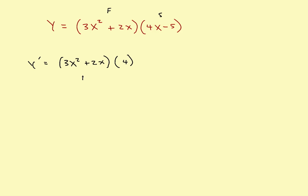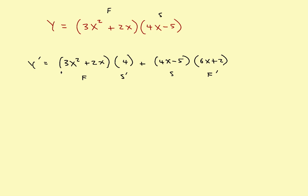So that's the first times the derivative of the second, then plus the second — the original second — times the derivative of the first. The derivative of this function would be 6x plus 2, and you're done. So that's the second times the derivative of the first. There's the derivative right there: first times the derivative of the second, plus the second times the derivative of the first.